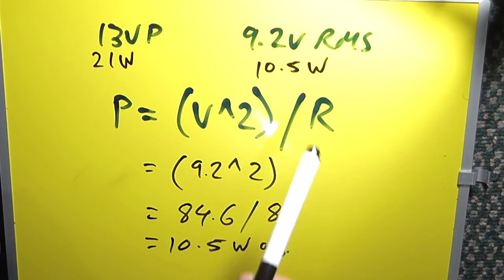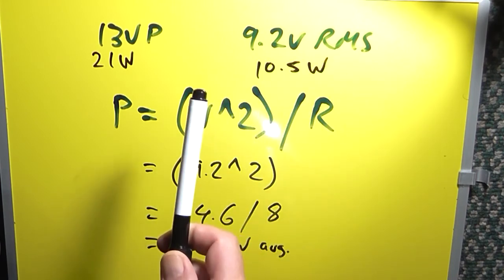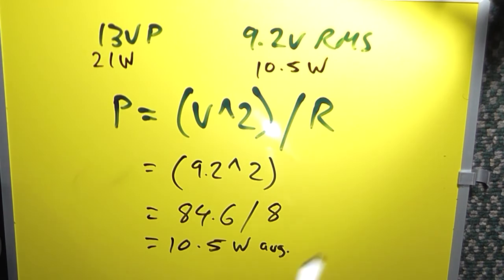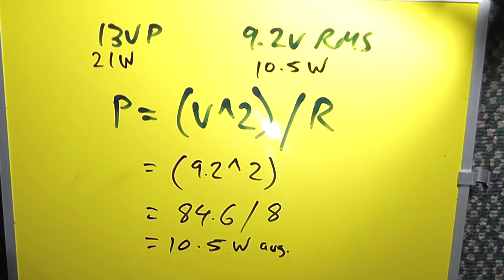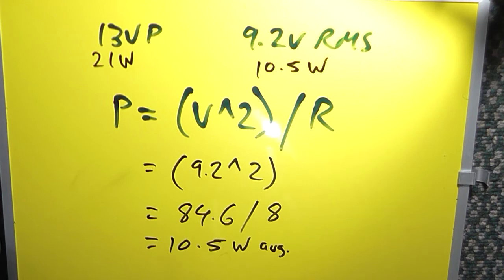So why do we use the RMS value rather than the peak? Because a speaker is not a resistive load — it is an inductive load, and sometimes it can be a capacitive load too, depending on the length of cable going to the speaker. The impedance or resistance of the speaker is going to change up and down with the frequency it is trying to produce, because a speaker is a rather hard load to drive. So we use the RMS value to give it the average power, because of that nuance of speakers.